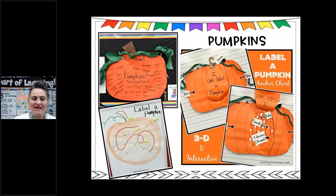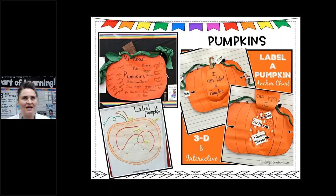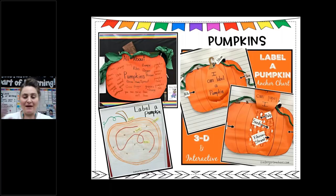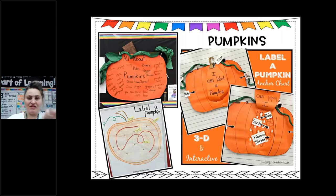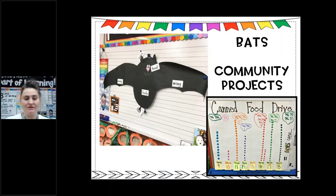Then I moved to pumpkins. I started simply with 'label a pumpkin,' then the next year I made it a two-part chart with a flap you could lift to see the inside of the pumpkin — and I added real seeds and yarn. That was a class favorite. For bats, we did a labeling chart. We also did a canned food drive, and the community project became an anchor chart — students showed their learning and made that connection.